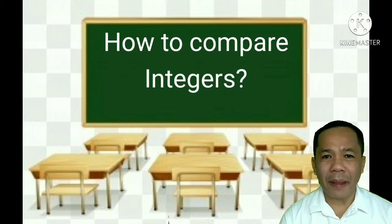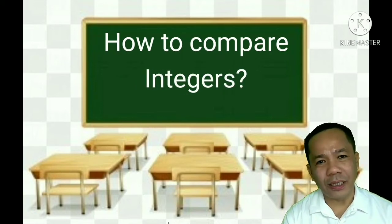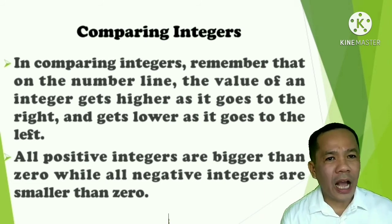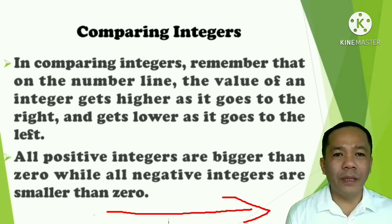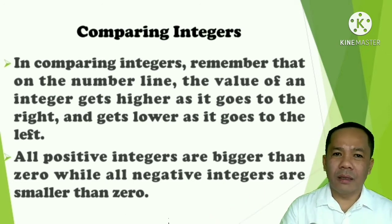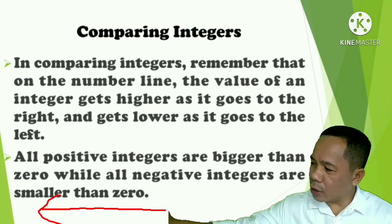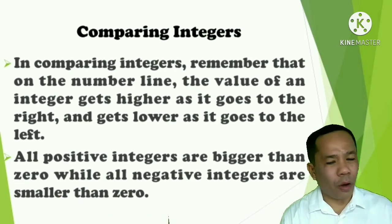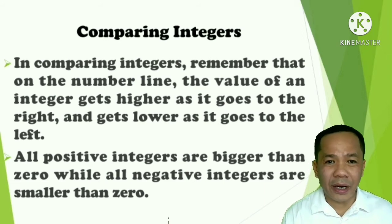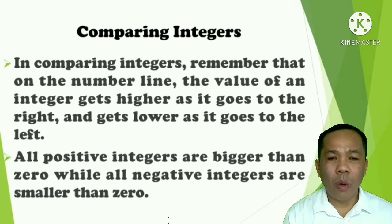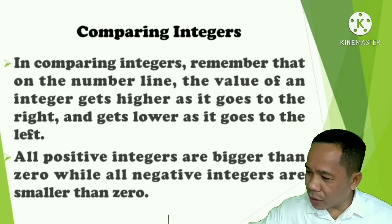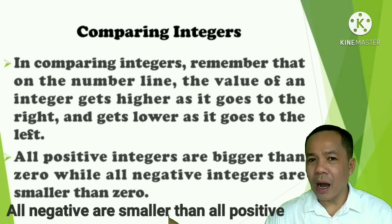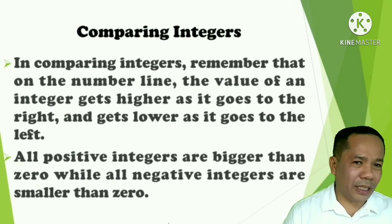Now, let us study how to compare integers. In comparing integers, remember that on the number line, the value of an integer gets higher as it goes to the right of the number line, and the value of the integer gets lower as it goes to the left of the number line. Remember that all positive integers are bigger than 0, while all the negative integers are smaller than 0. Therefore, the negative integers are also smaller than all the positive integers.